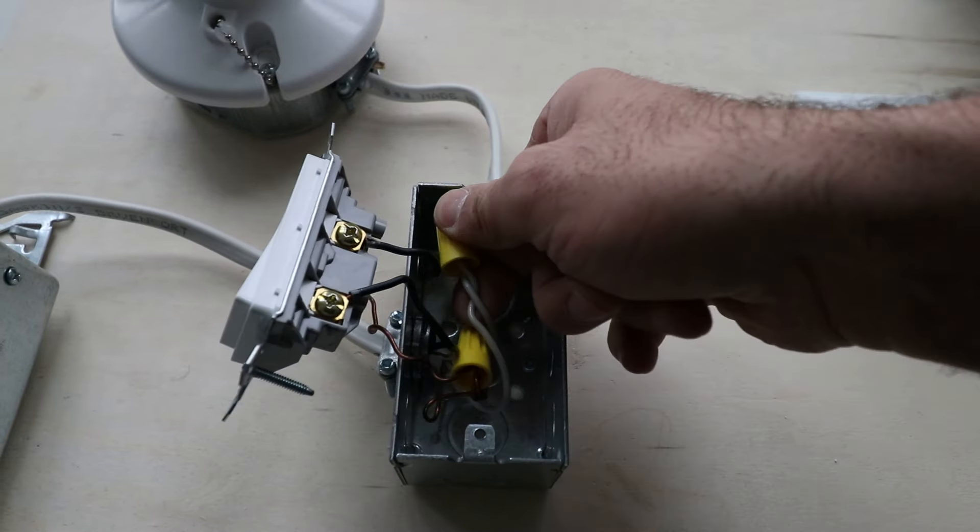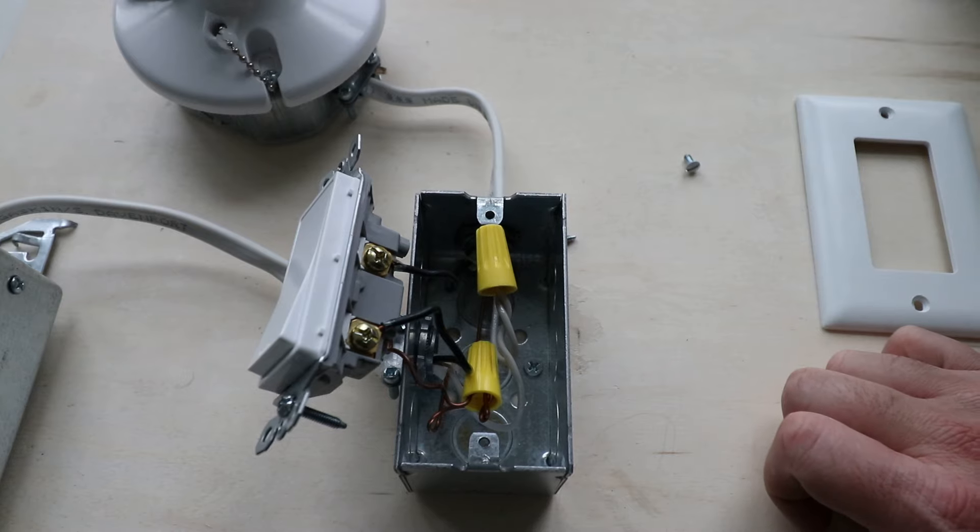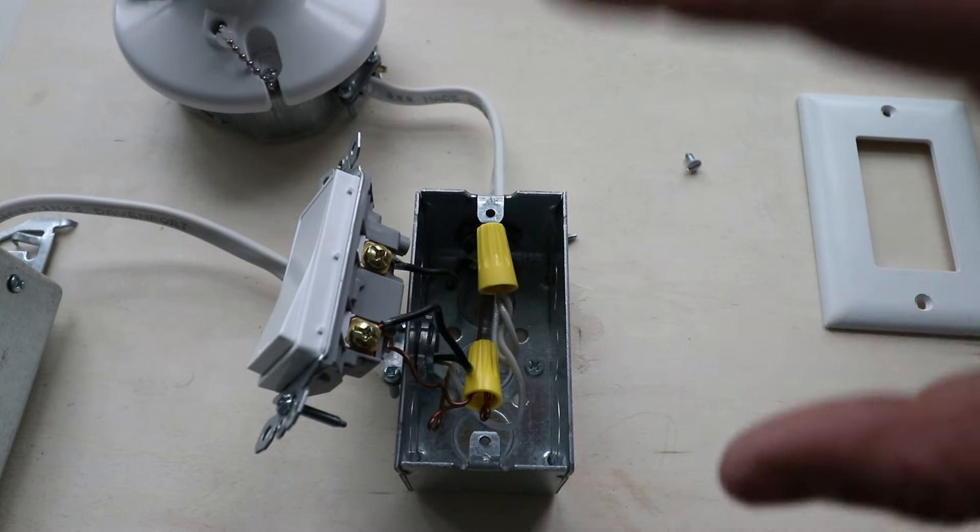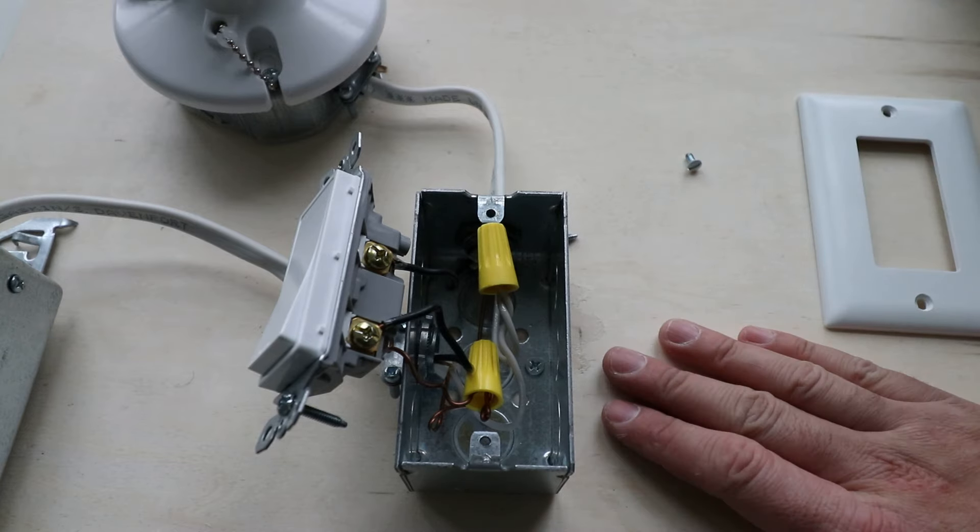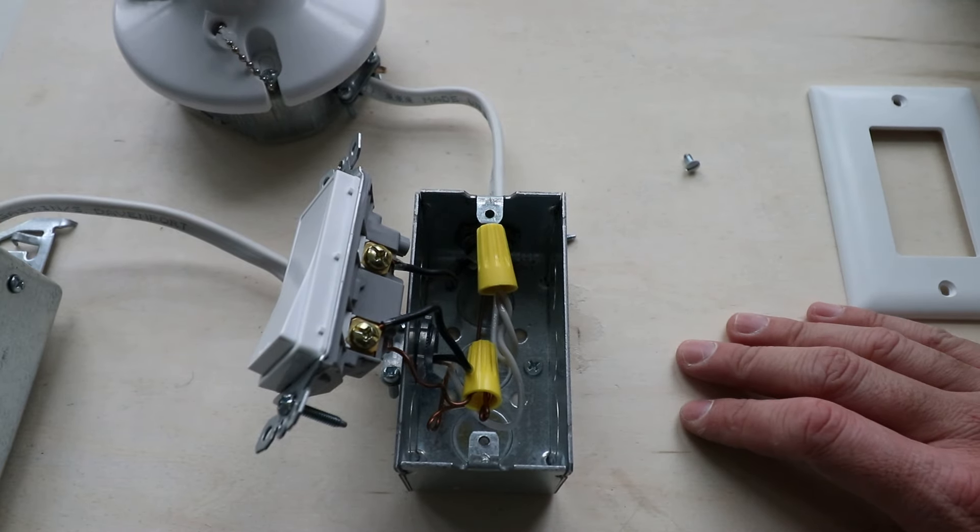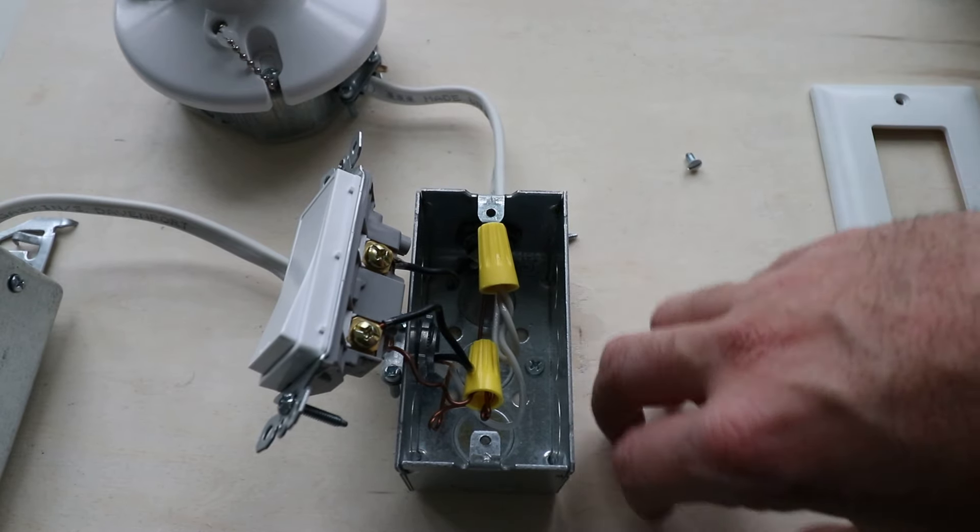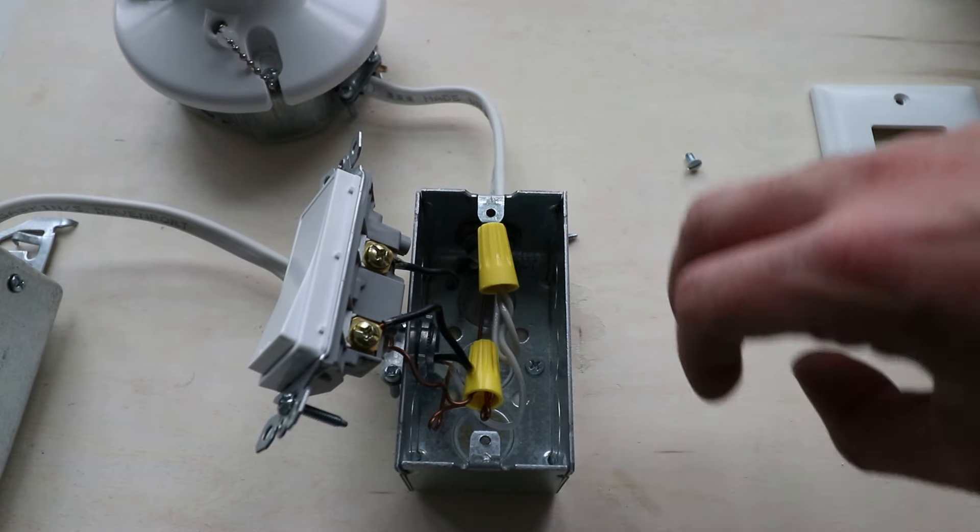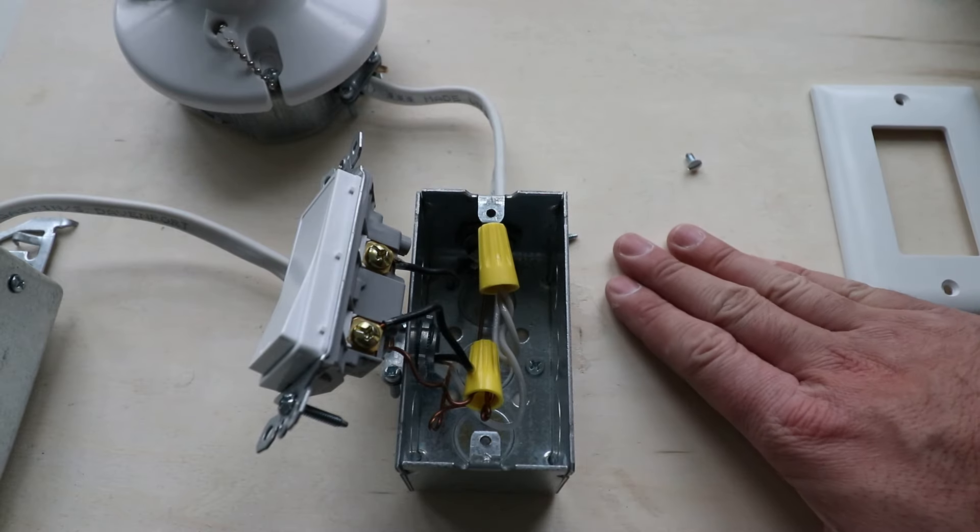And the question is why would you want to have a neutral wire in your electrical switch box? Well, because what's becoming more popular is smart light switches, and a lot of those light switches do require a neutral wire in order to operate. The reason is that the neutral wire allows those smart switches to maintain a little bit of current going through it so that it can connect to your Wi-Fi network and be controlled remotely.